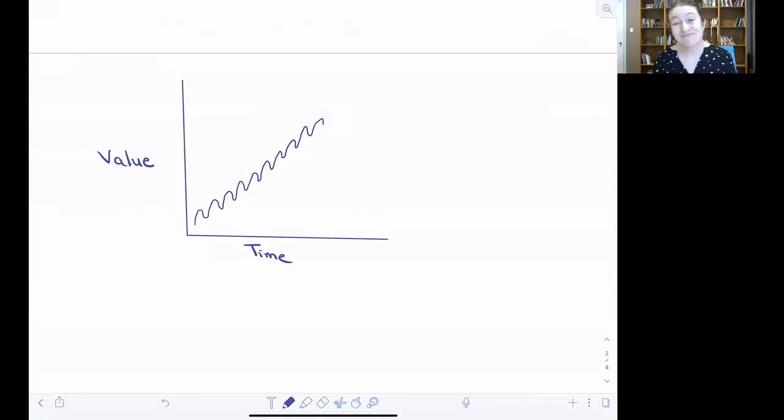In contrast, the multiplicative approach says these things interact. And so in contrast to the additive approach, you'd see something like this, where those fluctuations, those seasonal fluctuations, are getting bigger over time as the value that you're measuring also increases.